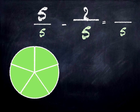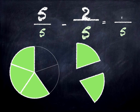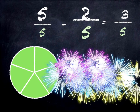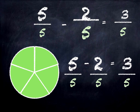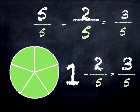And we're going to take 2 of those pieces away. What do we have left? We have 3 fifths. 5 fifths take away 2 fifths — 5 take away 2 is 3 fifths. And we know that 5 fifths is the same as 1, so 1 take away 2 fifths is 3 fifths.